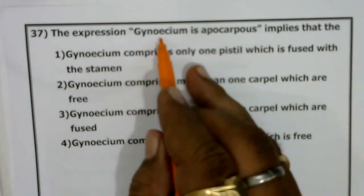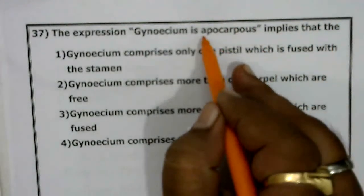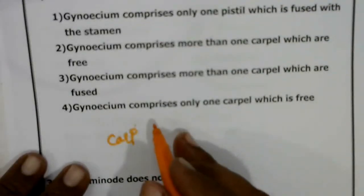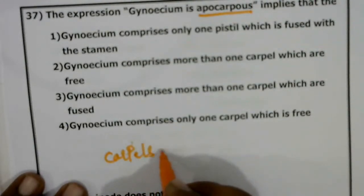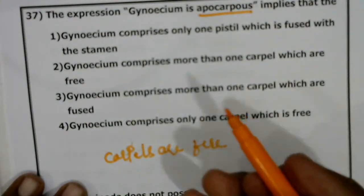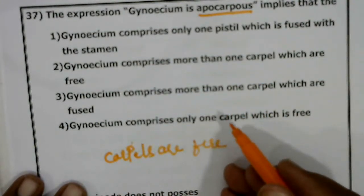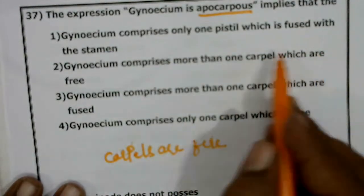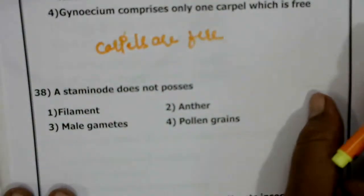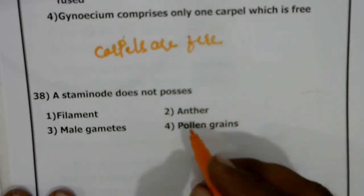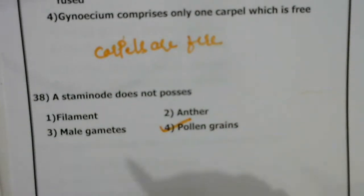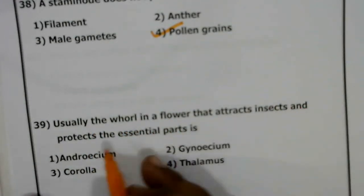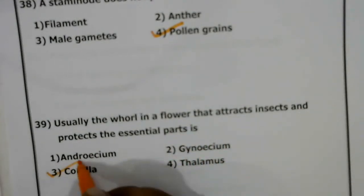Apocarpous gynoecium means the carpels are free. Syncarpous means the carpels are fused — gynoecium comprises more than one carpel which are free in apocarpous. Staminode means a sterile anther — if the anther is sterile, it will not produce pollen grains. The floral organs that attract insects and protect essential parts are the corolla.